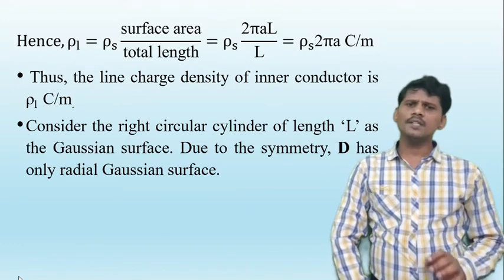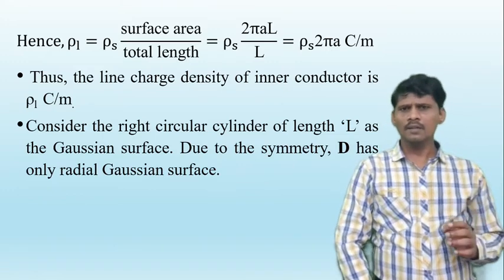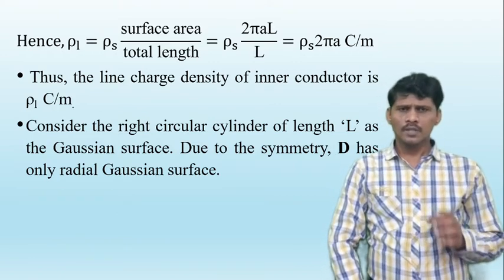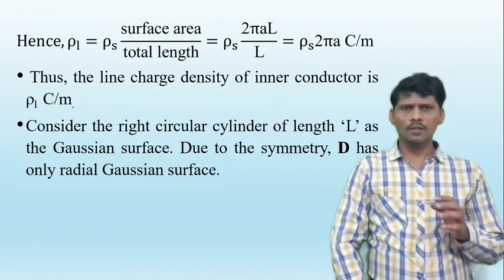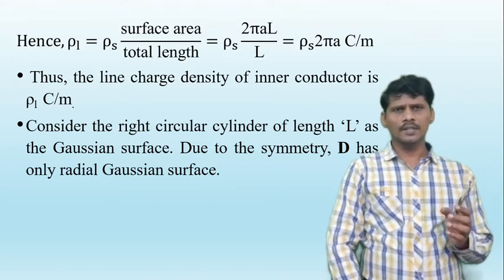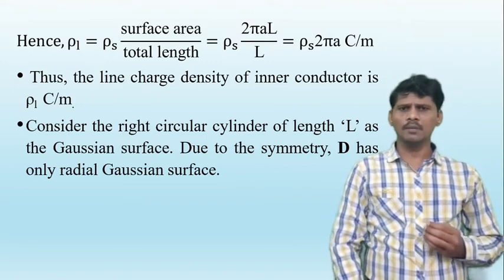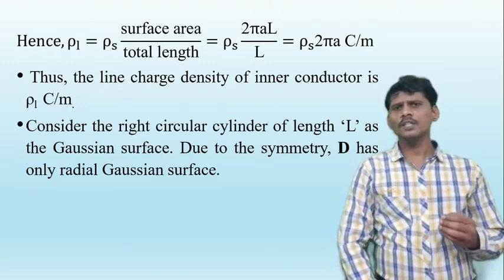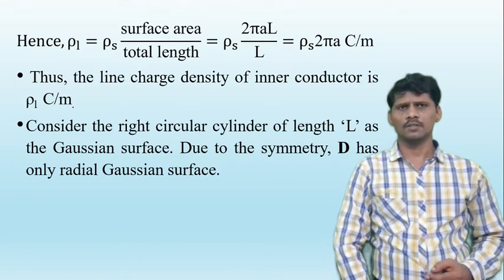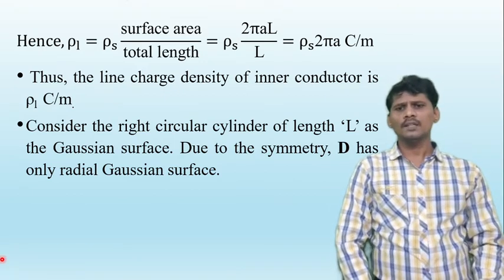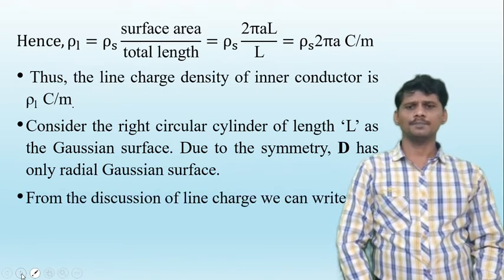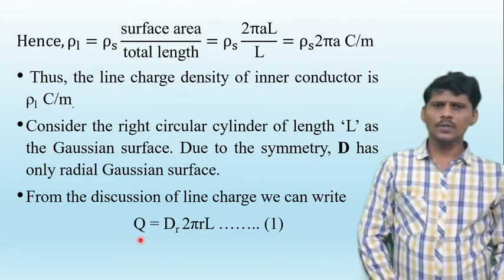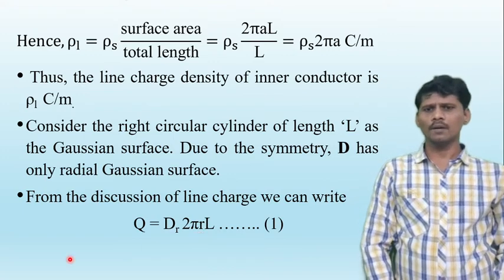Consider a right circular cylinder of length L as the Gaussian surface. Due to symmetry, the flux density has only the radial direction. Therefore, the charge associated is Q equals D_r times 2πrL.